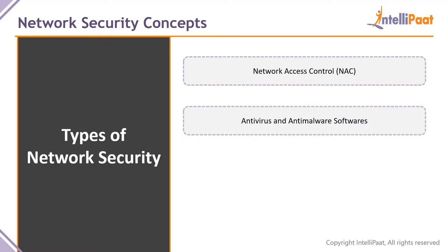Next we have anti-virus and anti-malware software. When running a computer network, malware, trojans, and worms are a threat because they can expose your network to intruders and attackers. Anti-virus and anti-malware software prevents that. You can deploy this software on all nodes present on your network to effectively stop the spread of viruses or malware.